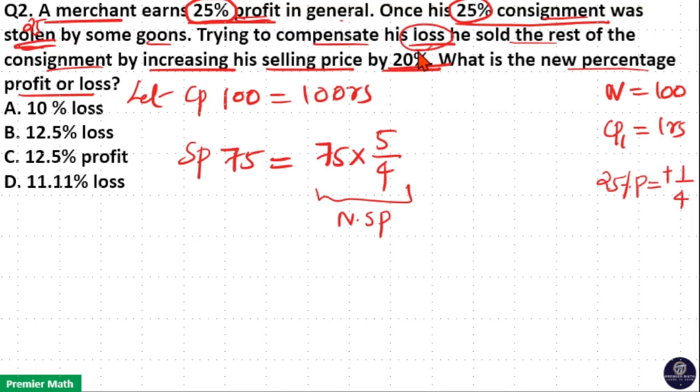But after the loss, he increased the selling price by 20%. So this is the normal selling price if he sells it at 25% profit. So he again increased it by 20%. That is, 20% profit equals profit means plus 20%, means 20 by 100. That is plus 1 by 5. So ratio will become 6 by 5.